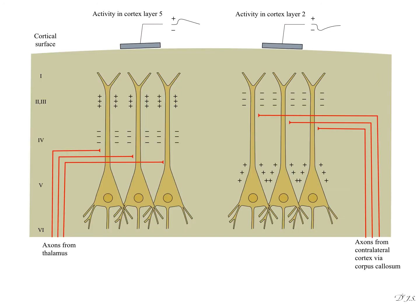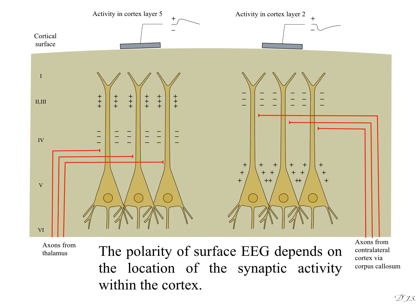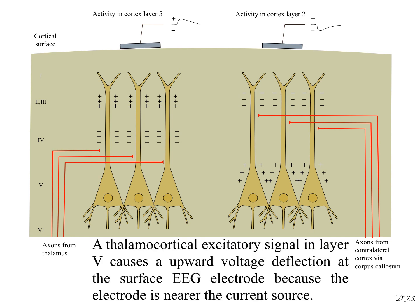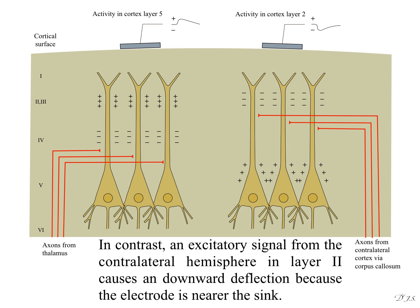The polarity of surface EEG depends on the location of the synaptic activity within the cortex. A thalamocortical excitatory signal in layer fifth causes an upward voltage deflection at the surface EEG electrode because the electrode is nearer the current source. In contrast,